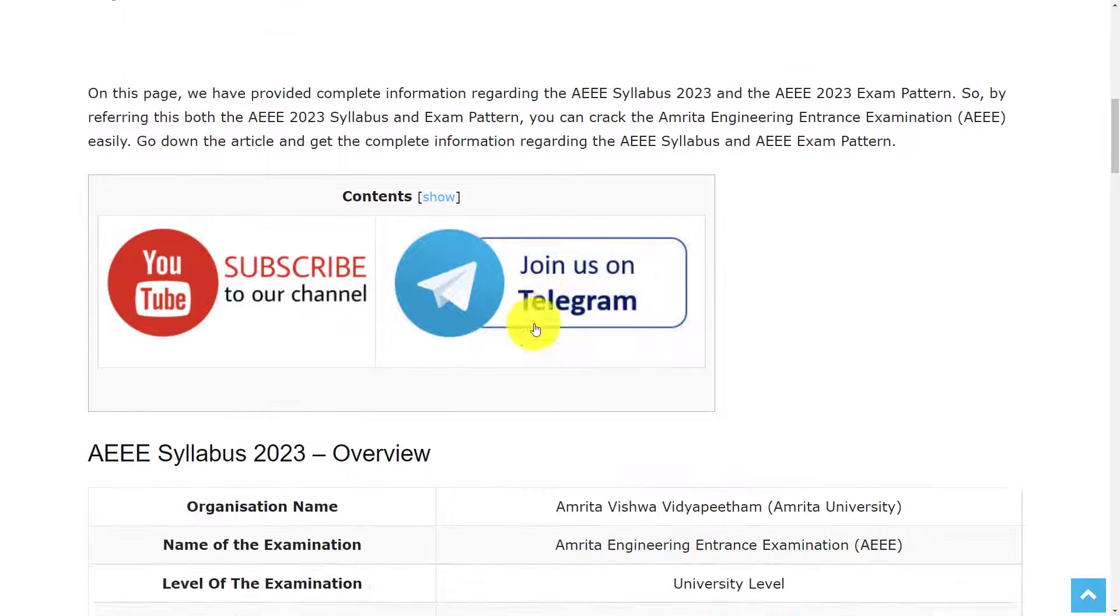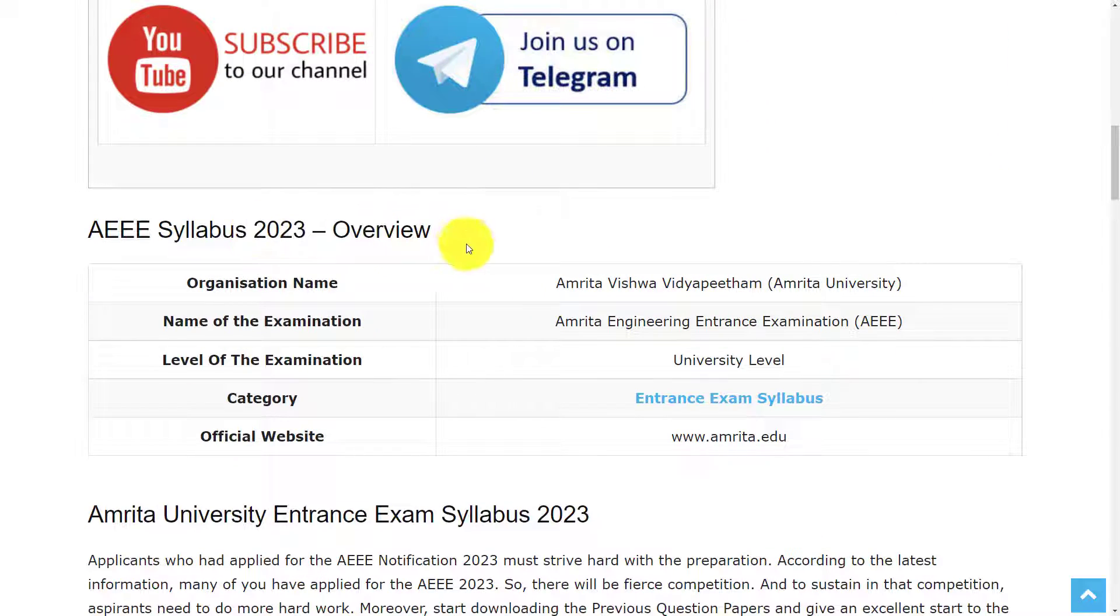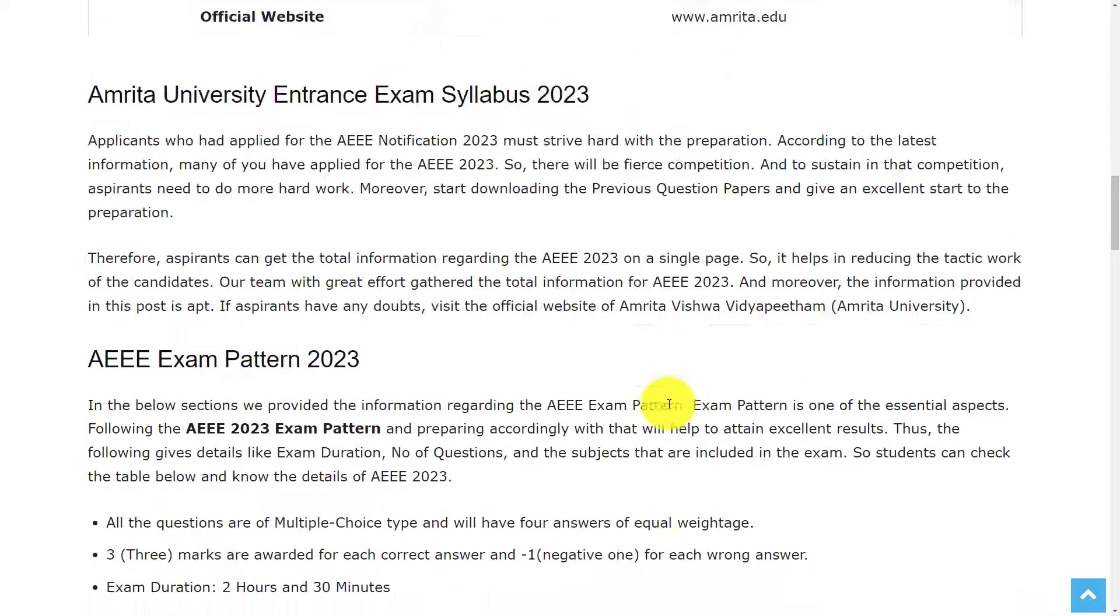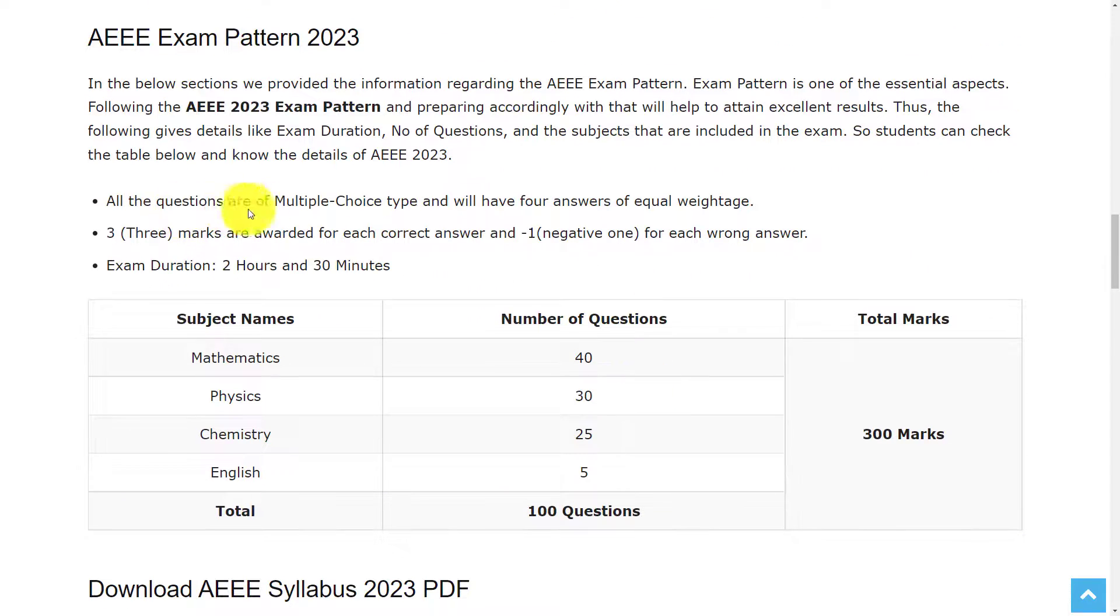Let's see the overview of AEEE 2023. The organization conducting this exam is Amrita Vishwa Vidyapitam or Amrita University, and the name of examination is Amrita Engineering Entrance Examination (AEEE). For any references, you can go through the official website www.amrita.edu.